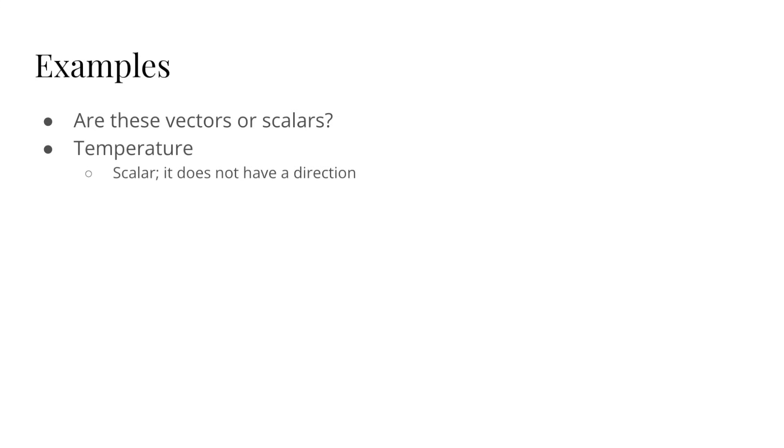Temperature is a scalar because it doesn't have a direction. We simply say it's 60 degrees Fahrenheit or 0 degrees Fahrenheit or negative 10 degrees Fahrenheit.